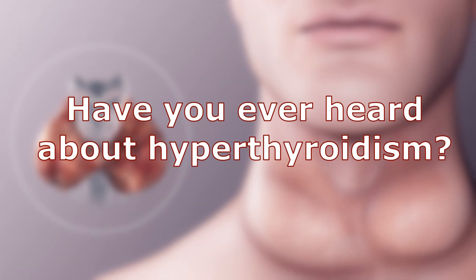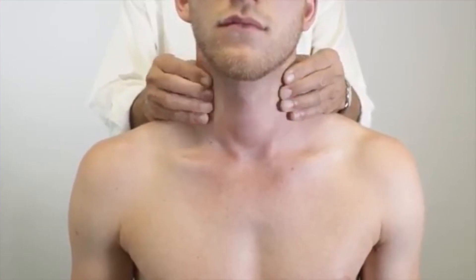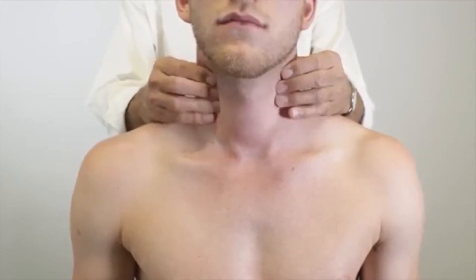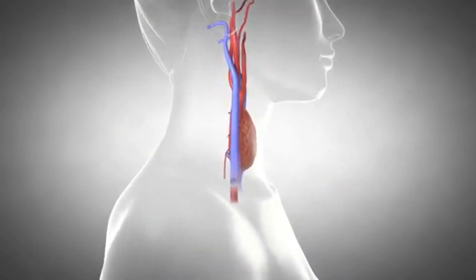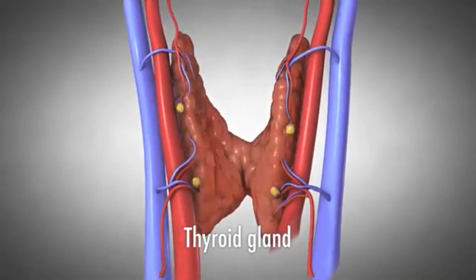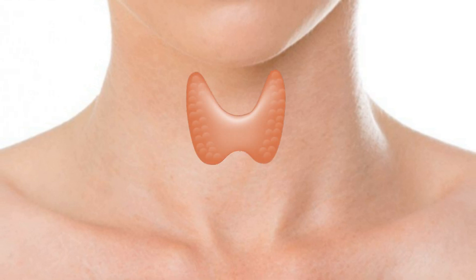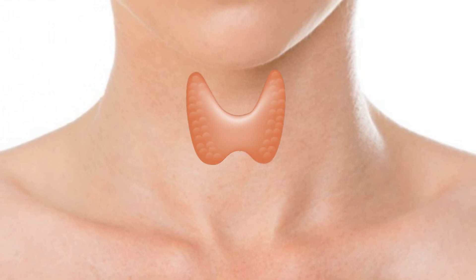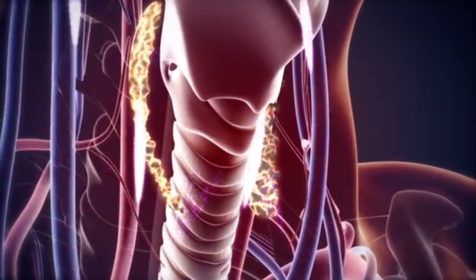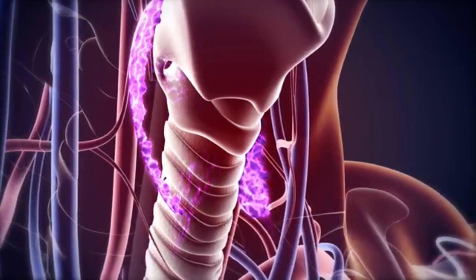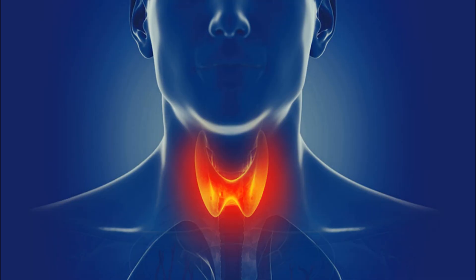Have you ever heard about hyperthyroidism? Do you have questions like: what is this disease, how does it happen? Let me introduce to you the thyroid gland — it is a small, butterfly-shaped gland that lies at the lower front of everybody's neck. Despite its small size, it plays a significant role in maintaining the normal pace of the body.